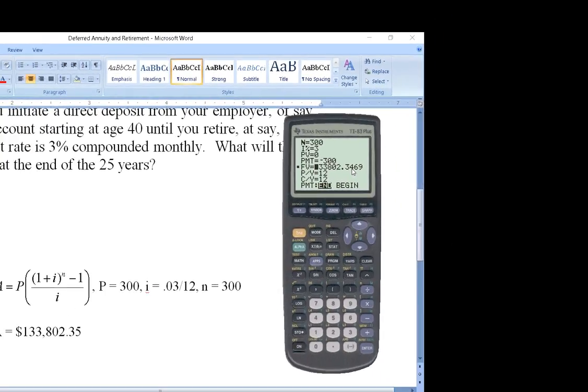Now if you leave the negative out here and make it a positive 300, all that happens is here you get a negative. So you can just ignore the negative if you want. But either way, it's $133,802.35.